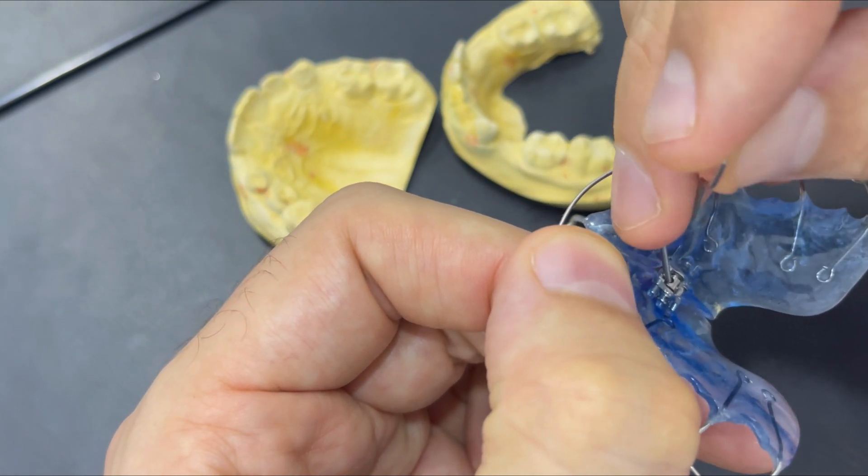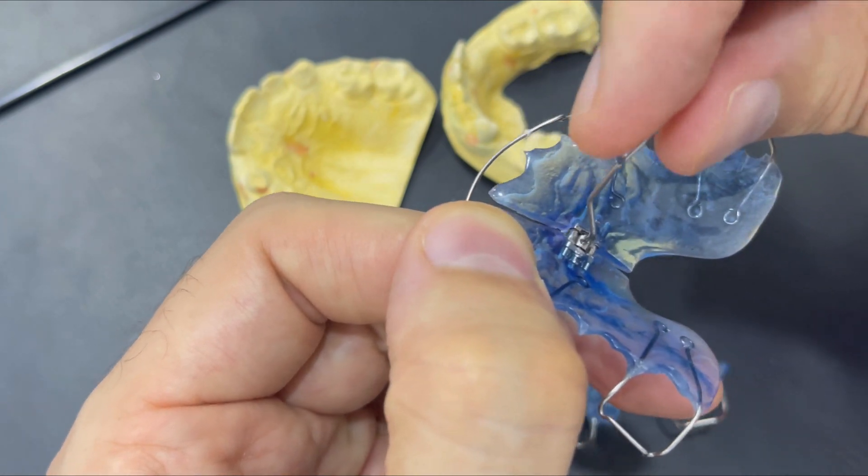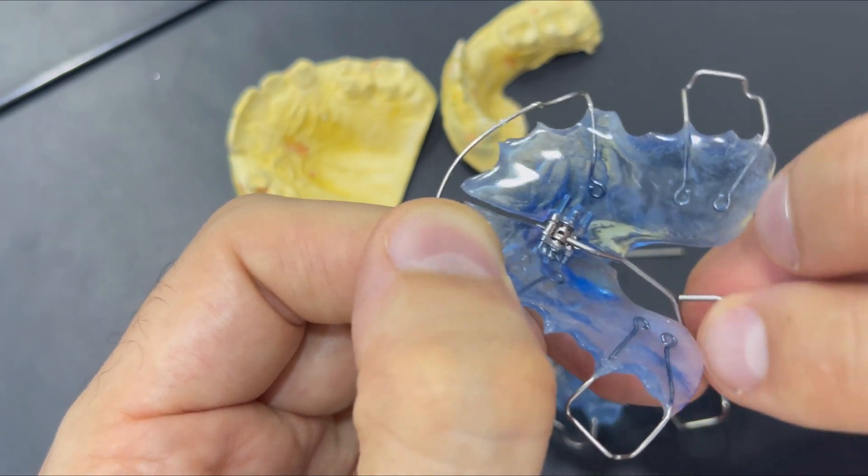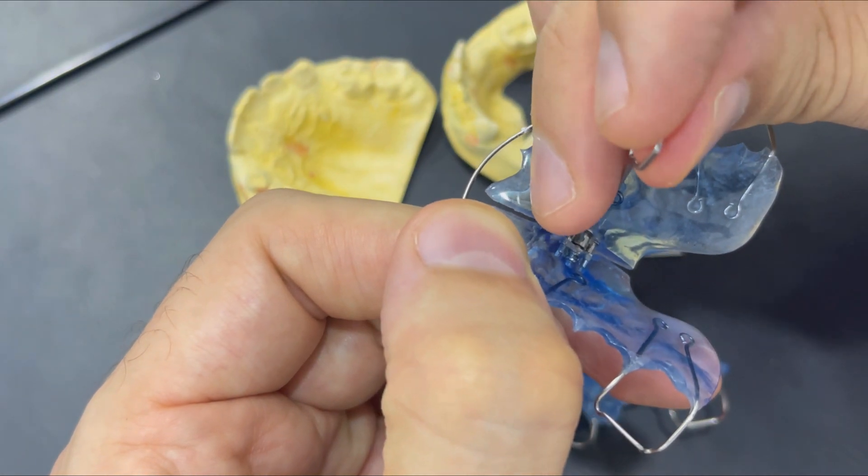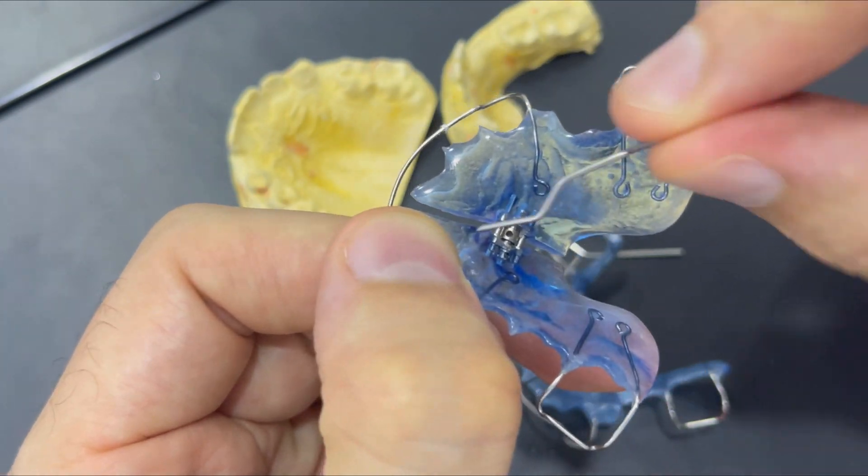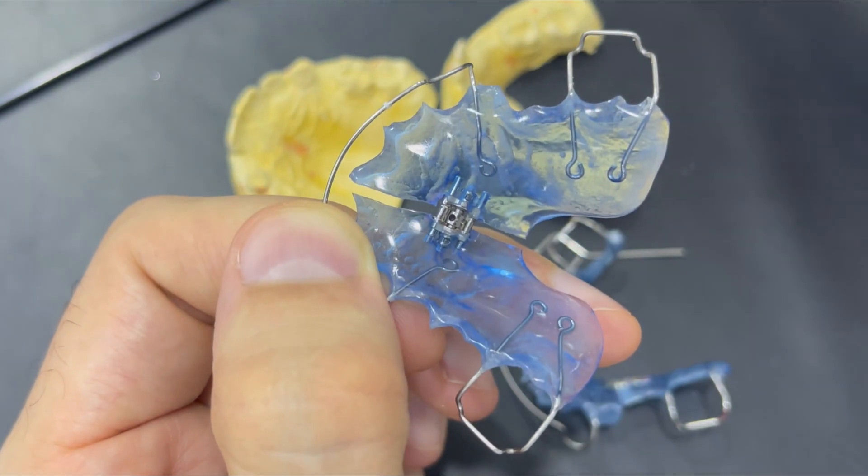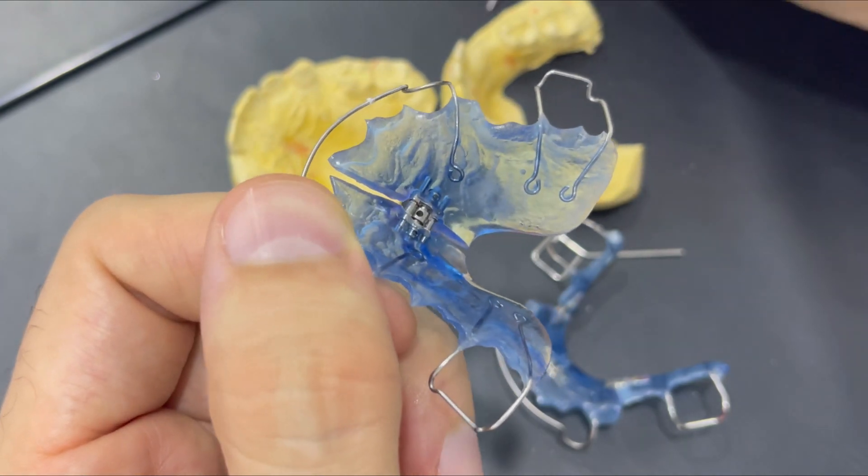For the maxilla, it's preferred to do one turn per week to give a chance for more skeletal expansion. The more we turn the device over time, we should see this crack splitting in the appliance, which means we are getting some expansion. Otherwise the screw could be not working.